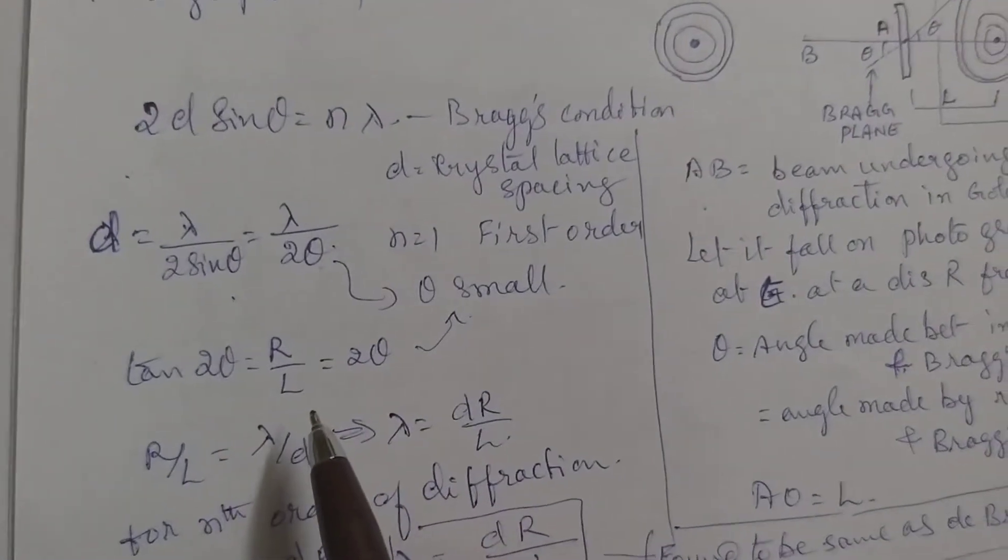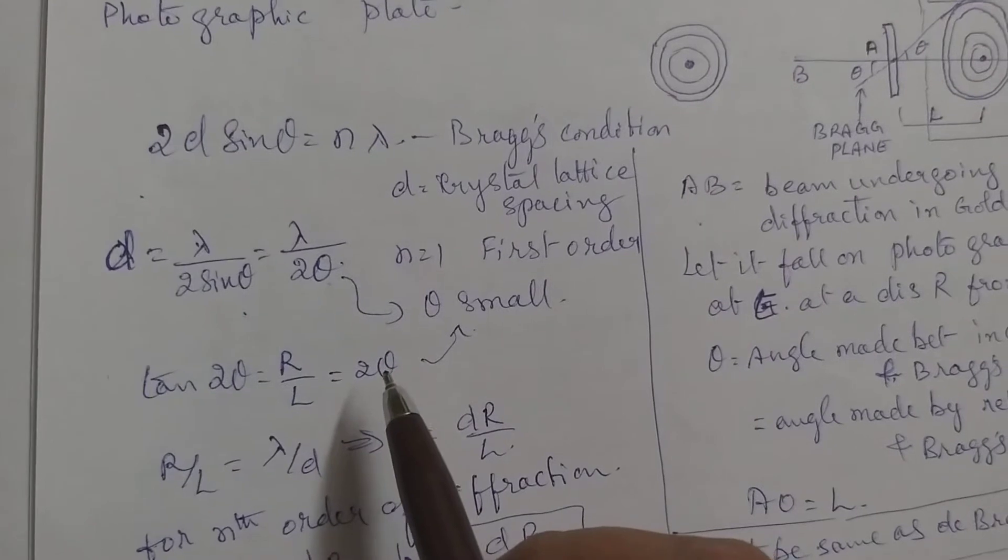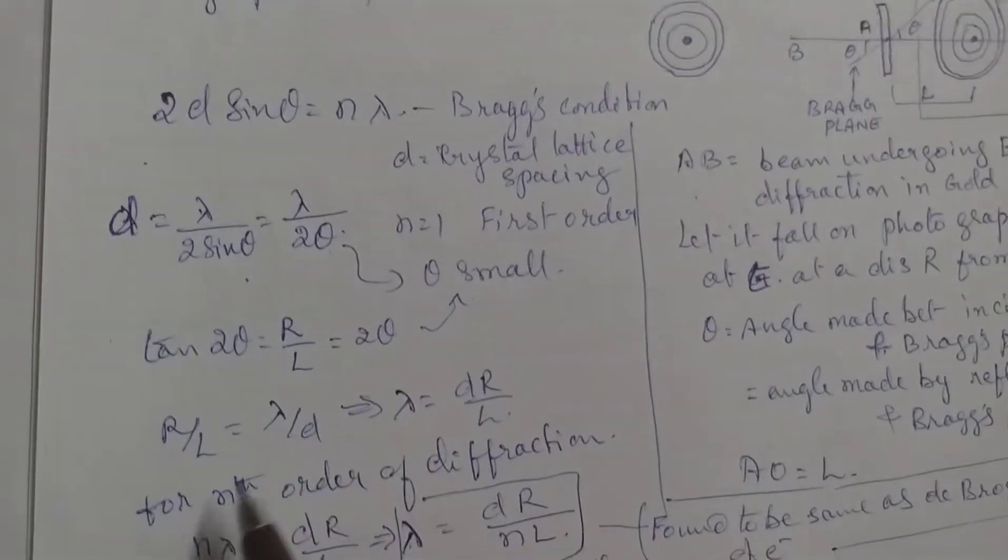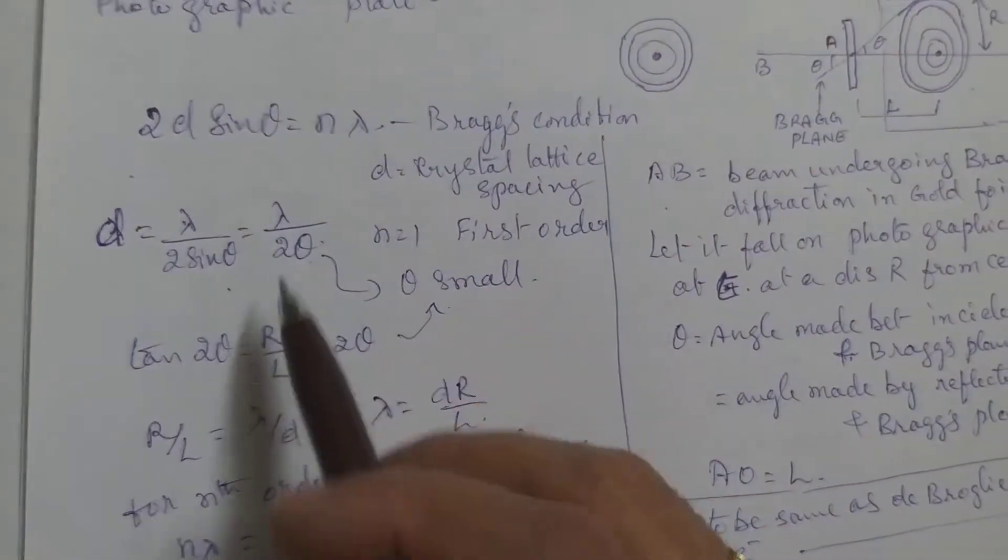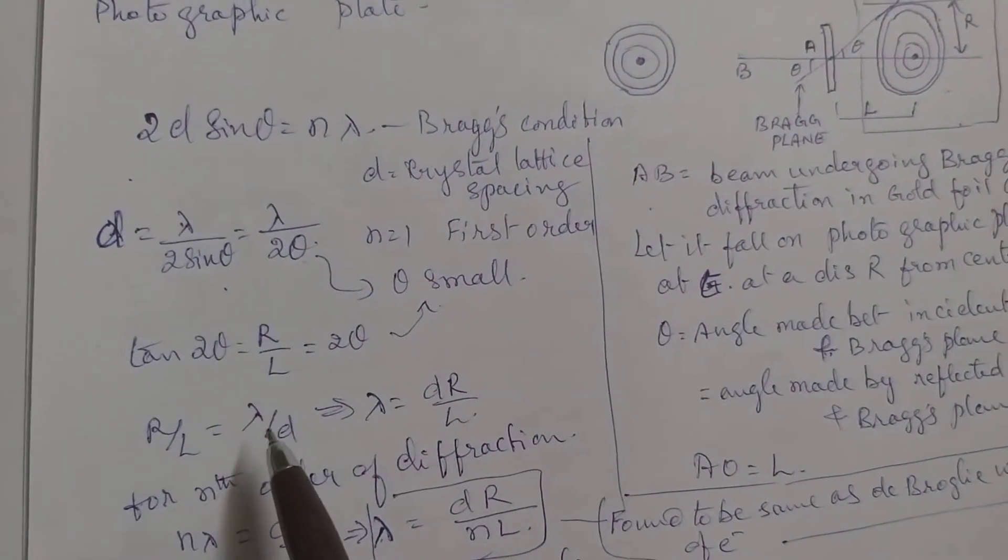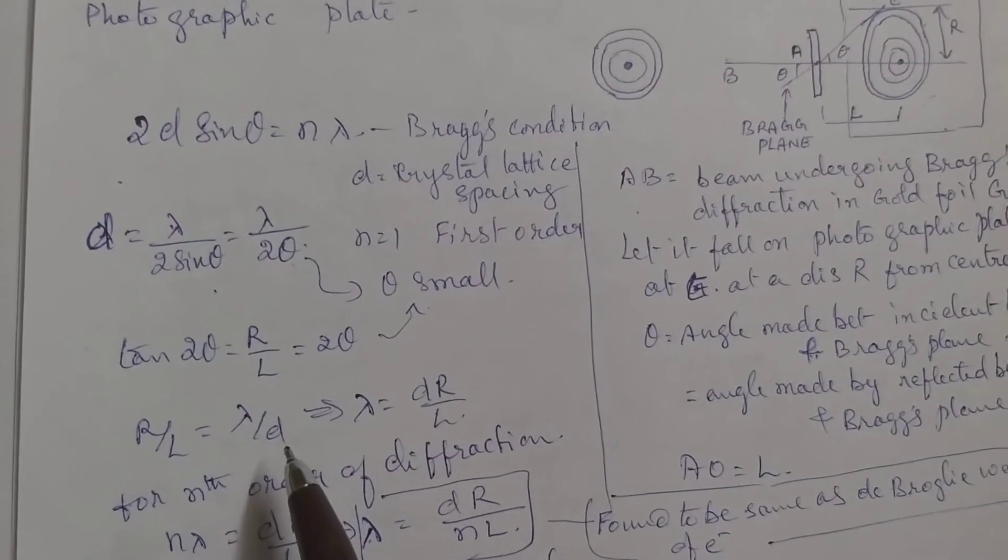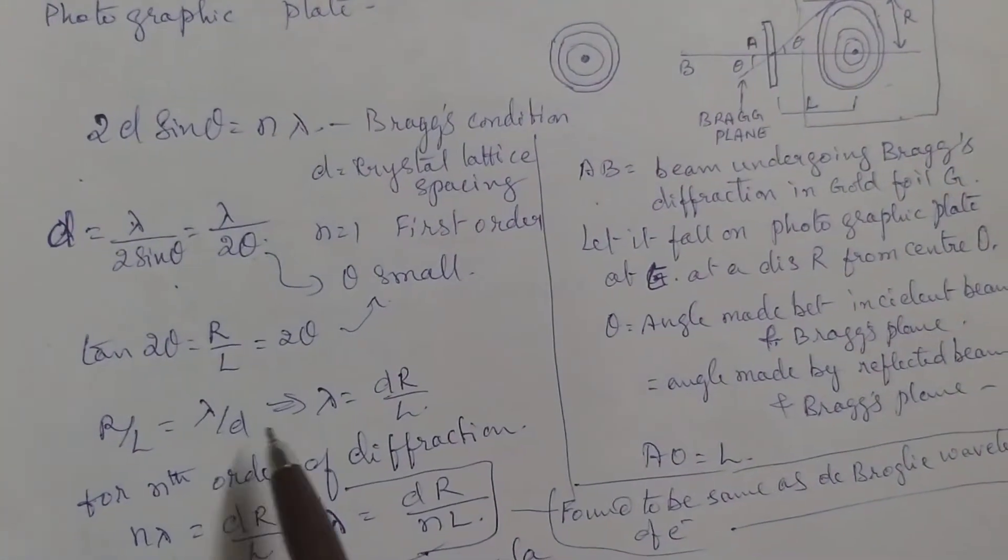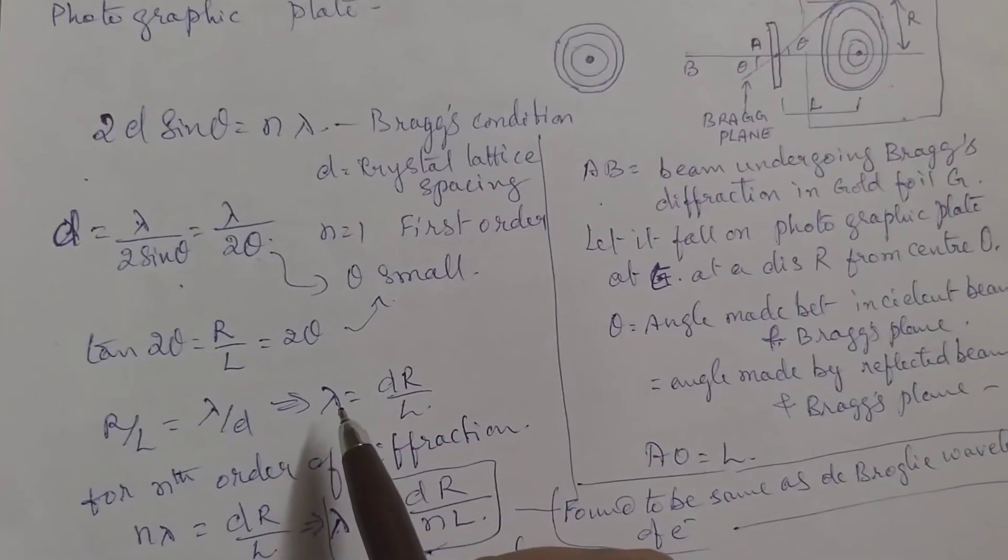Here it will be r by l equal to 2 theta because tan theta is also small. These two equations will give you r by l equal to lambda by d. 2 theta here is nothing but lambda by d, so this implies...